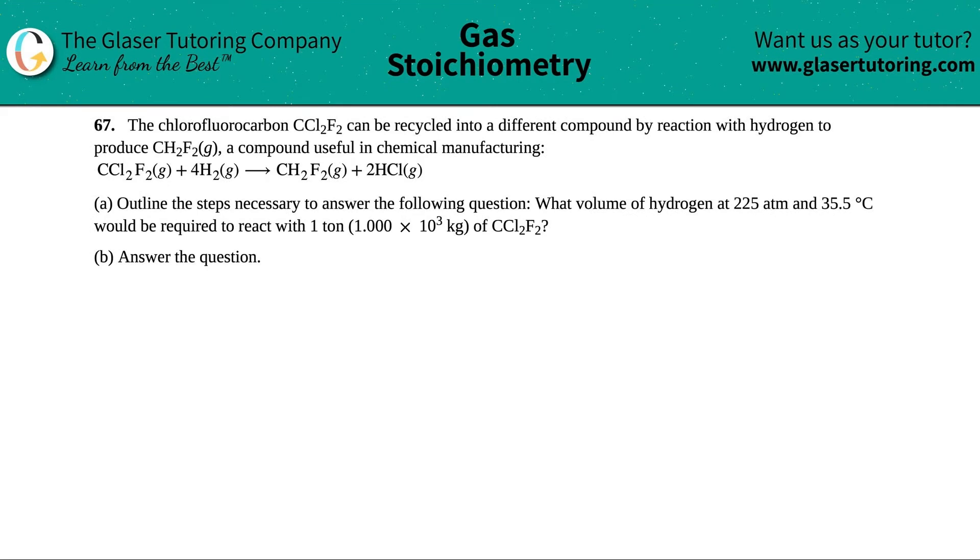Number 67: The chlorofluorocarbon CCl2F2 can be recycled into a different compound by reaction with hydrogen to produce CH2F2 gas, a compound useful in chemical manufacturing. They give us this equation. For letter A, it says outline the steps necessary to answer the following question: what volume of hydrogen at 225 atm and 35.5 degrees Celsius would be required to react with one ton, 1.00×10³ kg, of CCl2F2?